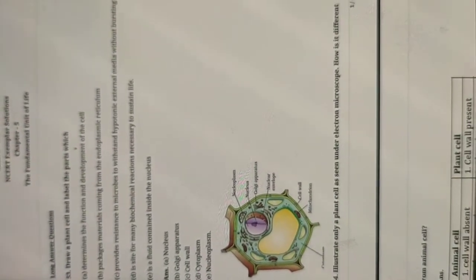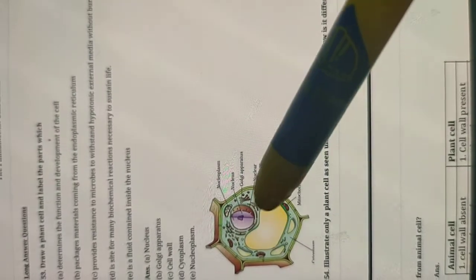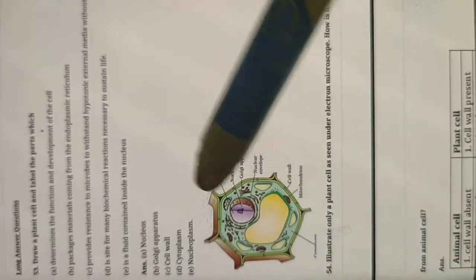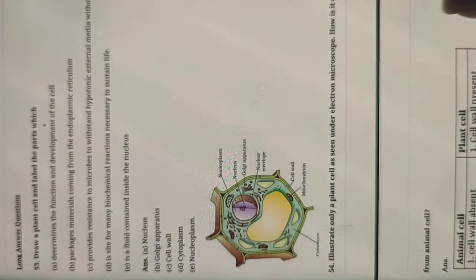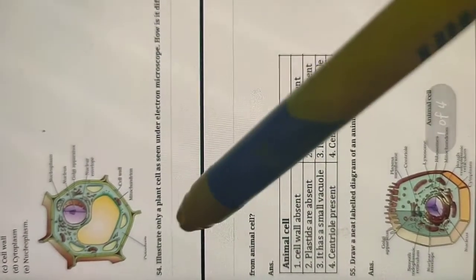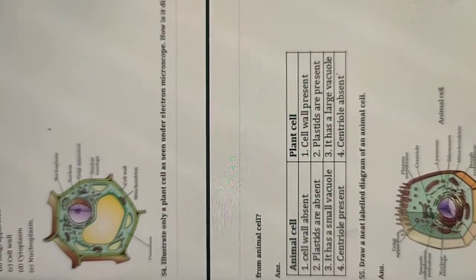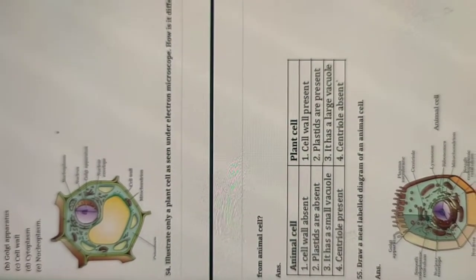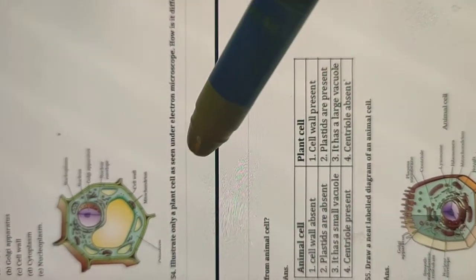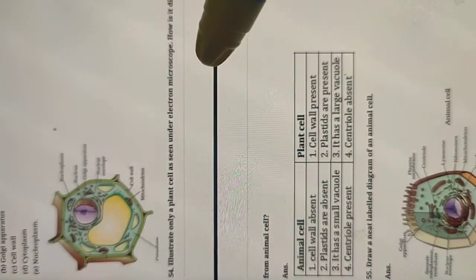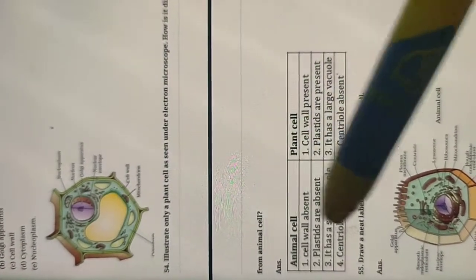Remember that the vacuoles in a plant cell are very large compared to those in an animal cell. A central large vacuole is present, so all other organelles are pushed to the sides. This completes your first question answer — it is a five-mark question. The second question says: illustrate only a plant cell as seen under an electron microscope and explain how it differs from an animal cell.